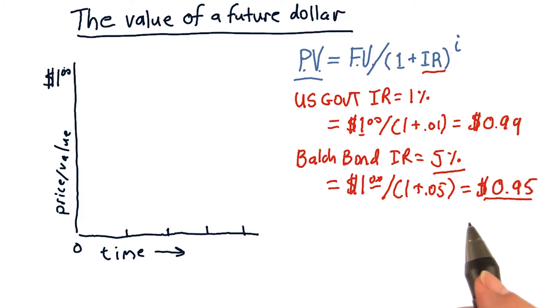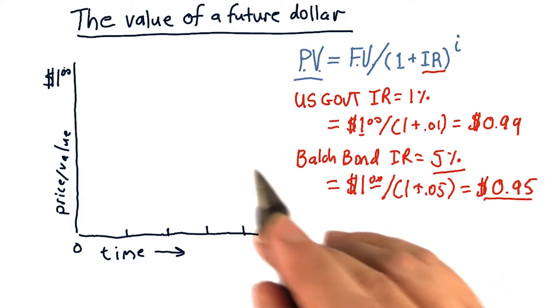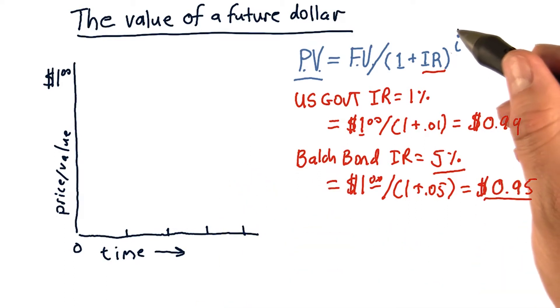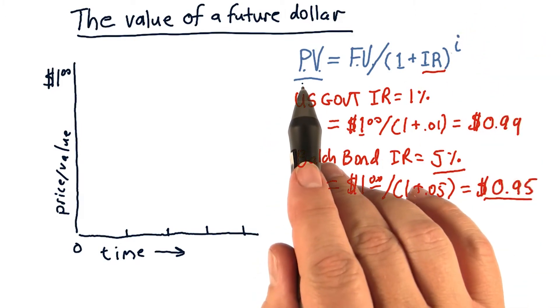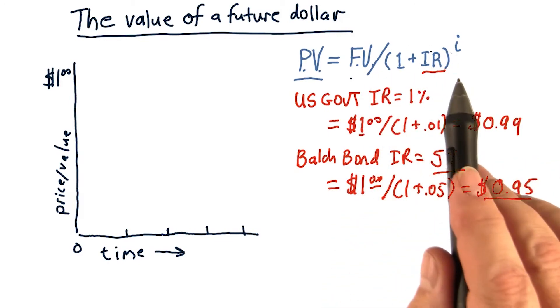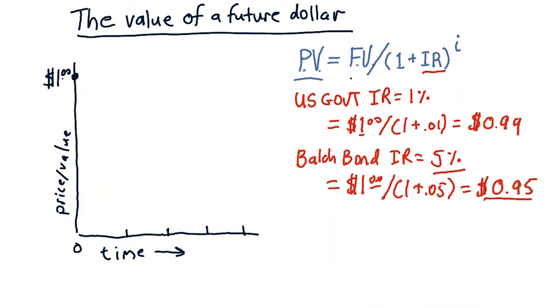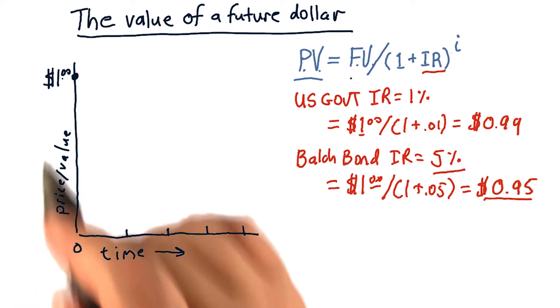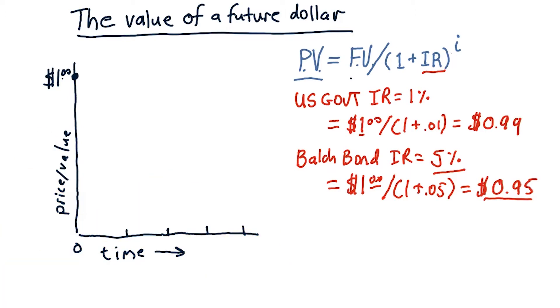So let's consider this in a chart form. So how much is a dollar worth if I promise to give it to you today? Well, in that case, this i is equal to 0. So the present value is equal to the future value of all this divided by 1. So in all cases, if the number of years we're going to wait for the delivery of that dollar is 0, the value is $1.